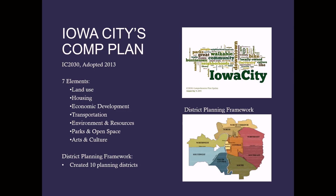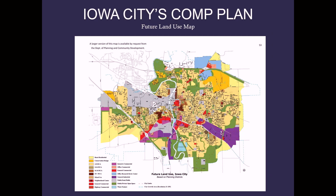The city's comprehensive plan, known as the IC 2030 plan, was adopted in 2013. It includes seven different elements with goals and strategies for each policy area. The plan also formalized the district planning framework, which breaks the city up into 10 planning districts. The future land use map identifies the general intended land uses for all properties within the city, from residential to commercial to industrial. The future land use map should be used in concert with the neighborhood design principles that speak to infill development, housing affordability, and diversity.